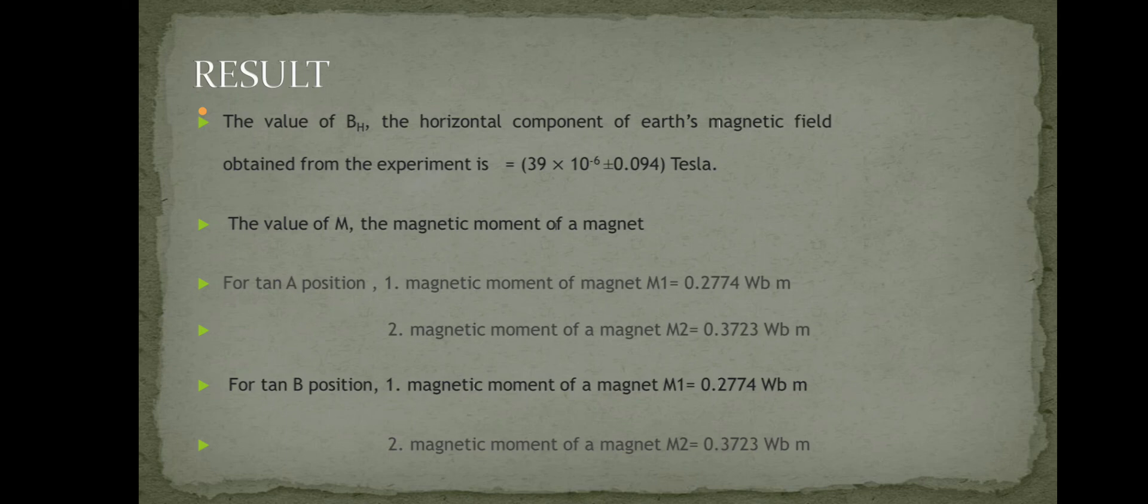For Ten A position: magnetic moment of magnet M1 equals 0.2774 Am squared, magnetic moment of magnet M2 equals 0.3723 Am squared. For Ten B position: magnetic moment of magnet M1 equals 0.2774 Am squared, magnetic moment of magnet M2 equals 0.3723 Am squared.